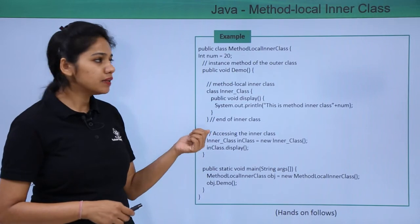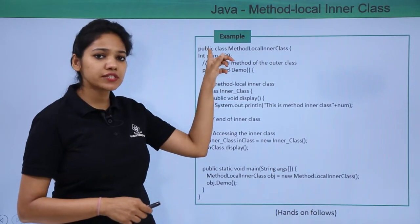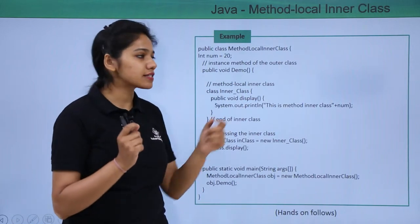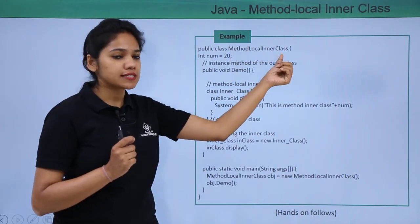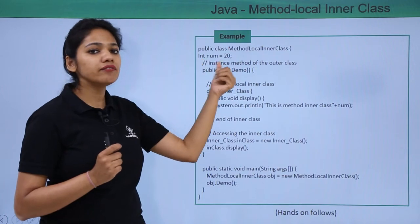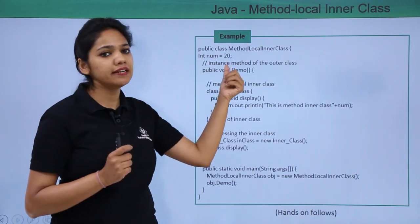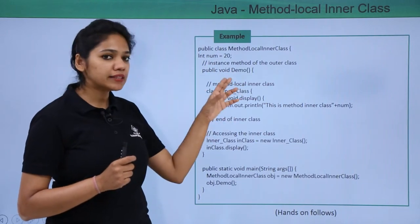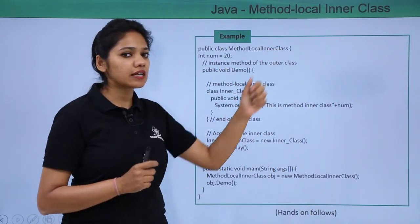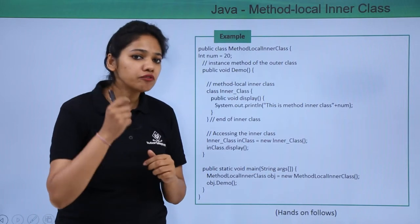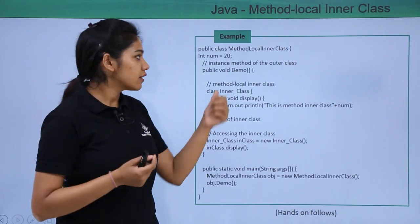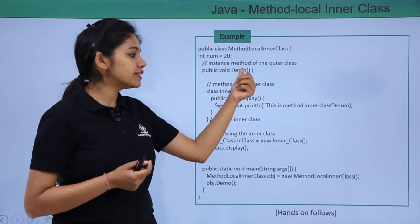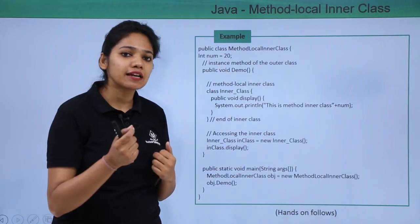In this example we have created an outer class — a public class named method local inner class. In this outer class we have created an instance variable int num equal to 20. Then we have created a method for this outer class: public void demo. Now inside this method we are going to declare an inner class.